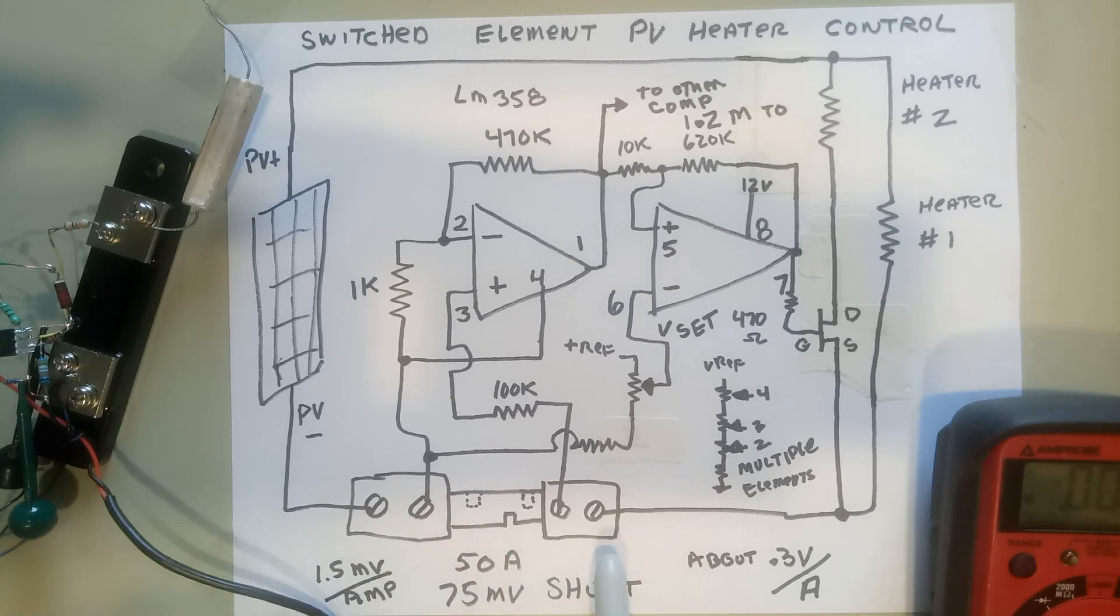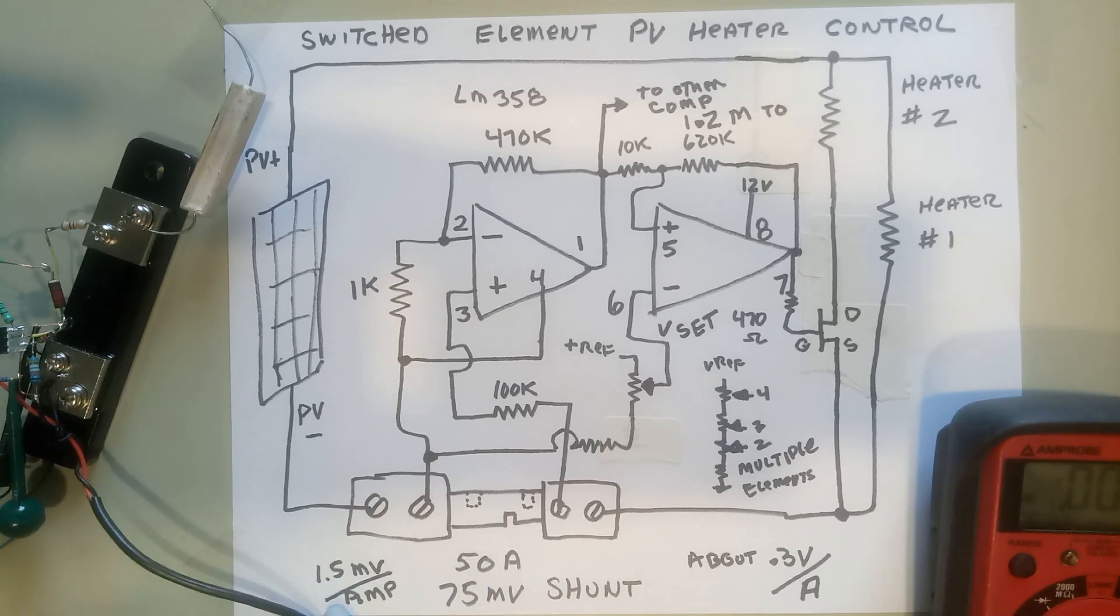This uses a 75 millivolt, 50 amp shunt—these are on eBay for a couple bucks. You'll notice they have a little calibration notch here. This is 1.5 millivolts per amp, which takes a bunch of amplification. If you want to make it even more sensitive, you could widen this notch. The current's doing an S-curve, so maybe you could get up to 2 or 3 millivolts per amp, much more sensitive.